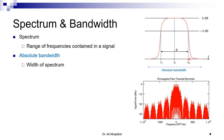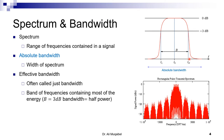Practically, absolute bandwidth is not used because it's not possible to have exactly zero due to noise. Instead, we use the effective bandwidth — the band of frequencies containing most of the energy of the signal. Most people define this using the half-power or -3 dB point: find the peak, go down minus 3 dB, and draw a line. This gives the lower and upper cutoff frequencies, and the distance between them is the effective bandwidth.